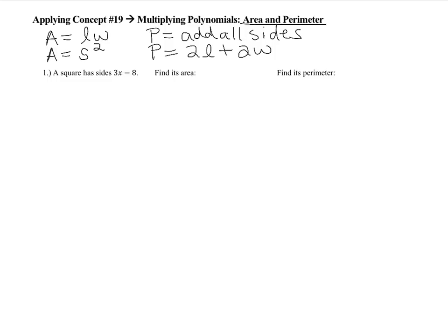Let's look at number 1. A square has sides 3x minus 8. Since all four sides of a square are equal, the area is 3x minus 8 squared, which is the same as 3x minus 8 times 3x minus 8. Then we apply FOIL.